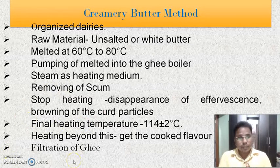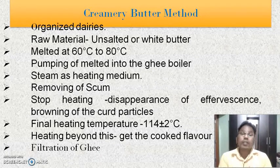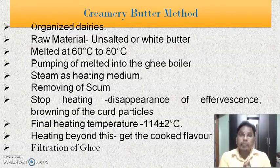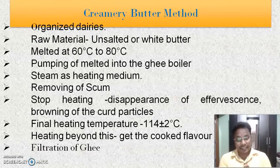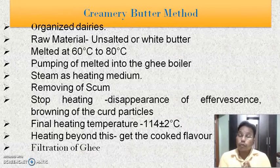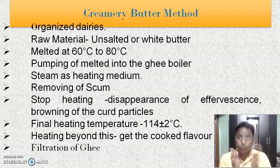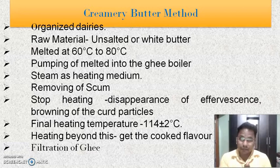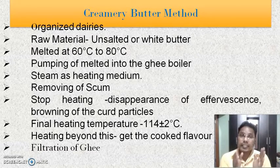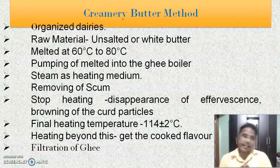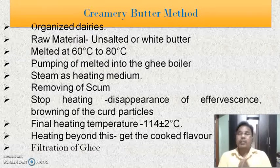After this end point, the final heating temperature is 114 degrees Celsius. When we reach the end point, the ghee is heated to 114 degrees Celsius. If we want to develop a cooked flavor in that ghee, then beyond this temperature the ghee is heated further, which will give a cooked flavor. When the cooked flavor is developed, the ghee is filtered and kept in a settling tank. In this way, ghee is prepared by the Creamery Butter method.